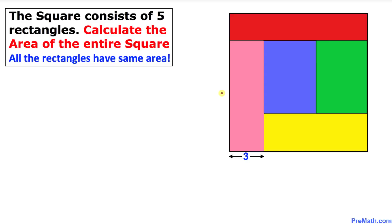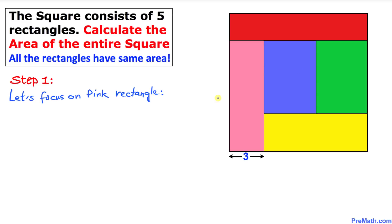Welcome to pre-math. In this video tutorial we have a square that consists of five rectangles as you can see in this figure. We are going to calculate the area of this entire square. One more thing: all these individual rectangles have the same area. So let's go ahead and get started.